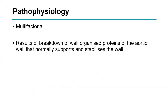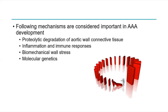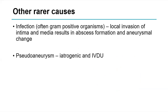The pathophysiology of abdominal aortic aneurysm is multifactorial, commonly resulting from breakdown of well-organised proteins of the aortic wall such as elastin and collagen. With decreasing elastin and collagen, the aortic wall destabilises and the risk of dilatation increases. The key mechanisms are: proteolytic breakdown of aortic wall connective tissue, inflammation and immune response, biomechanical wall stress, and the interplay of molecular genetics — all four factors combining to cause AAA.